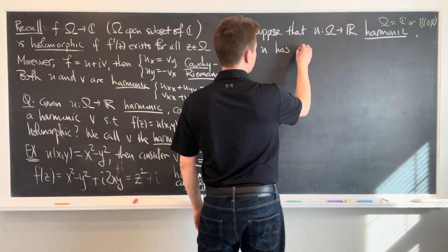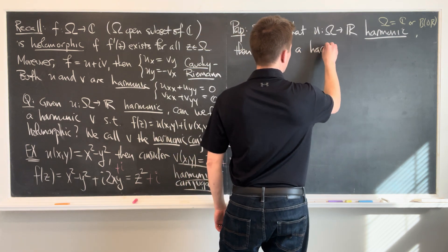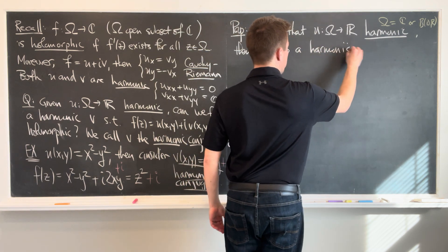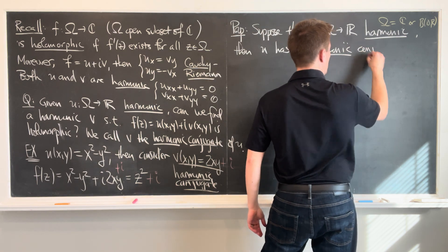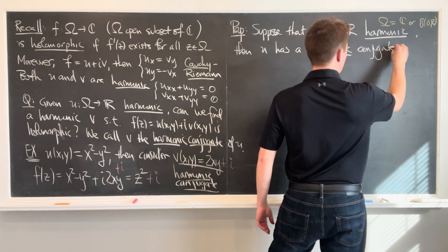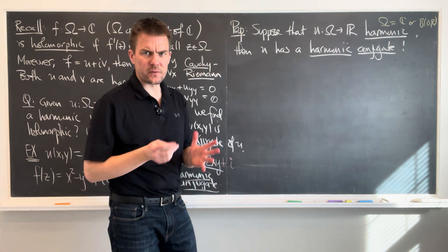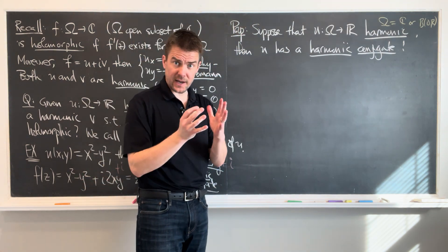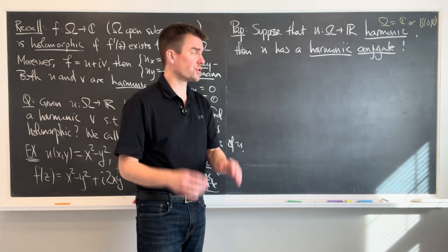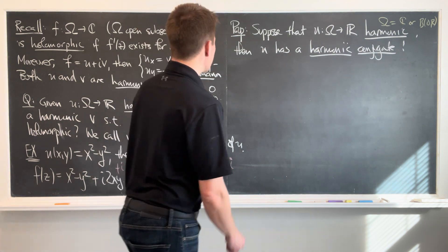Then u has a harmonic conjugate. Good news for us. It's actually sort of a remarkable theorem. The fact that we can concatenate two harmonic functions to form an analytic function. Non-trivial. So proof, here's what we're going to do.